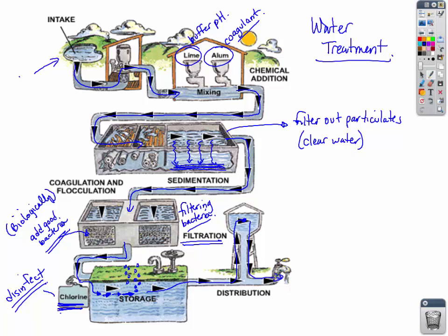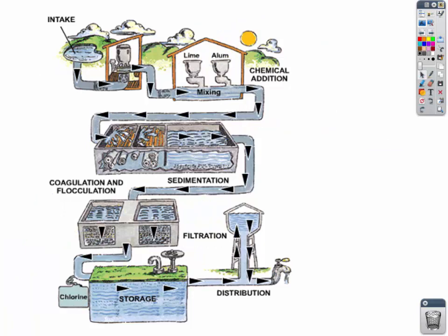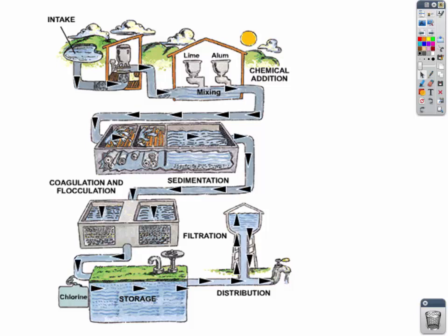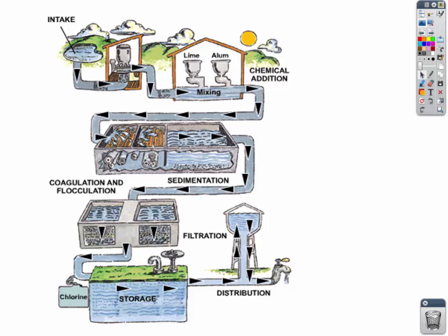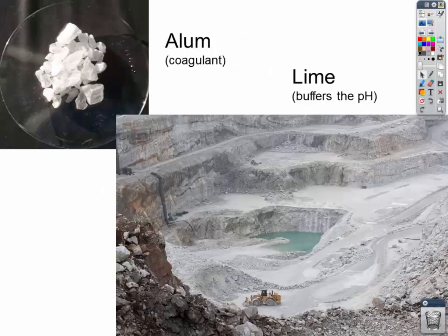Hopefully, that diagram gives you a nice indication of the process of treating the water before it gets to you. If you have any questions, please bring them to class. Let's take a look at a couple pictures. Alum as a coagulant and lime buffers the pH. This is a limestone quarry — I just wanted to show you that these are two natural ingredients.